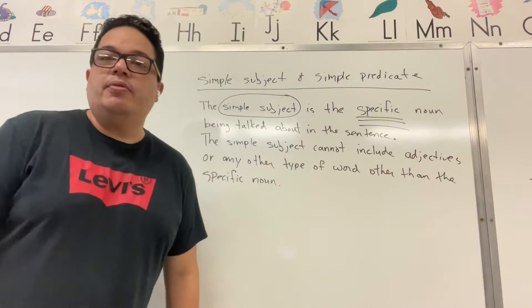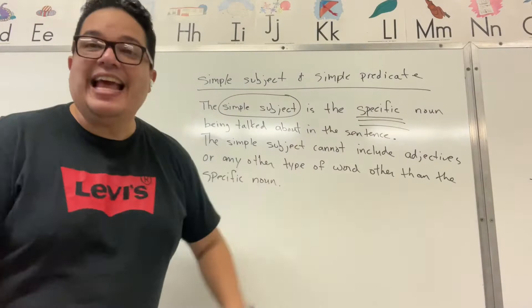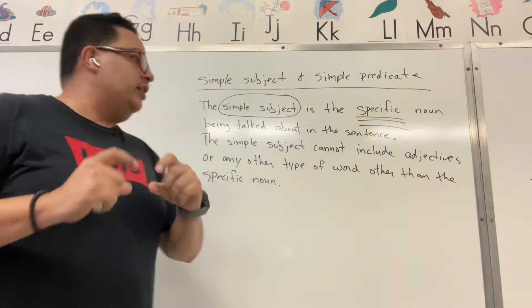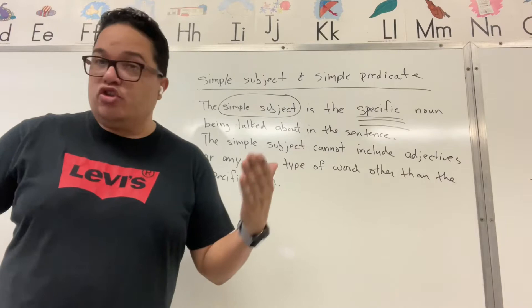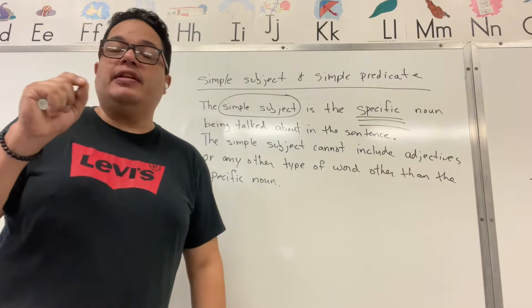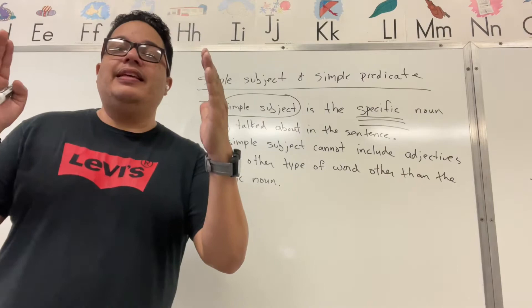Simple subject and simple predicate. The simple subject is the specific noun that's being talked about in the sentence. We can only include that specific noun as the simple subject. So the simple subject cannot include adjectives, no words that describe, no words that tell us any other information about that noun. It can only be the specific noun, and we will identify that specific noun in the part of the subject.